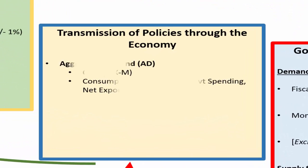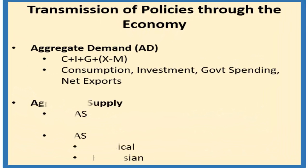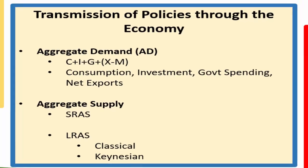So then these policies are transmitted through the economy through aggregate demand and aggregate supply. Aggregate demand is made up of consumption spending by households, me and you, investment spending by businesses, government spending and net exports, which is the difference between the value of exports minus the value of imports. Aggregate supply, we're going to look at two forms, short-run and long-run. So short-run is changes in cost of production, how that affects firm supply in the short-run. And then long-run aggregate supply, there's two versions of that, classical and Keynesian, which represents the long-term productive potential or long-term trend rate of growth of the economy.